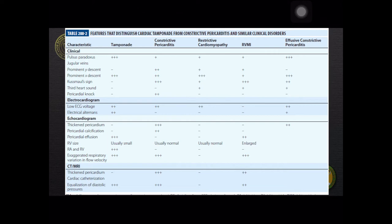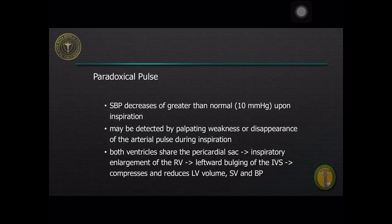Differentiation is based on clinical features, electrocardiographic, echocardiographic, and CT-MRI findings. Cardiac catheterization may be necessary if other findings are non-diagnostic. An important clinical clue in cardiac tamponade is the presence of paradoxical pulse, defined as a decrease of greater than normal systolic blood pressure upon inspiration, which is more than 10 mmHg.